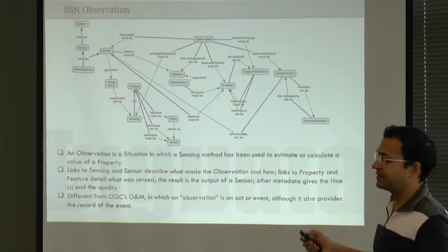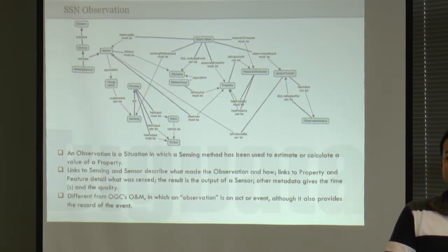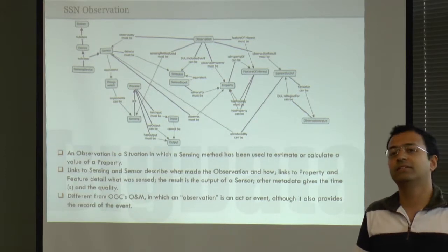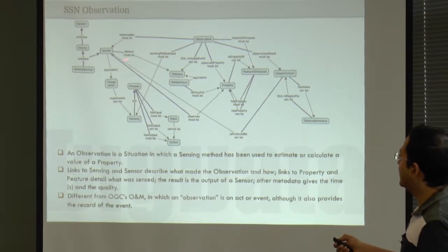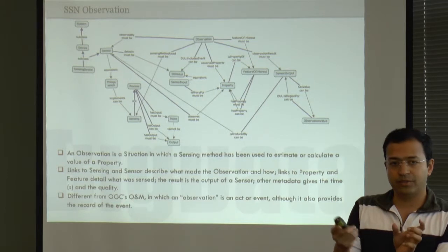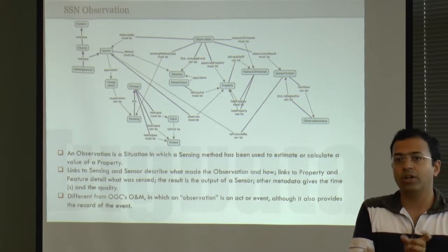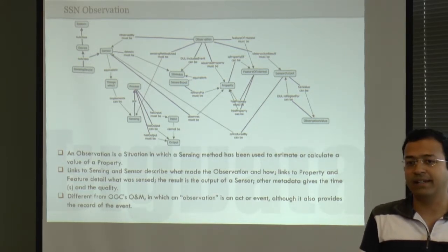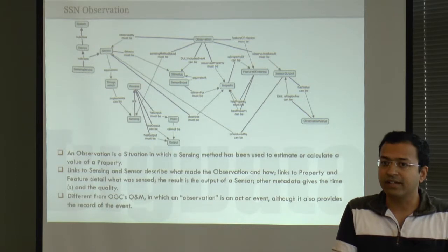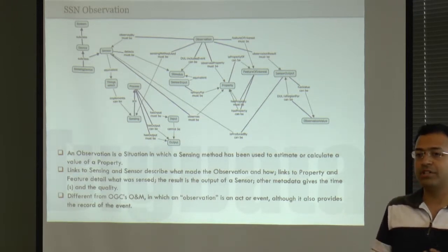SSN observation is a way of associating meaning to the data being generated by the sensor. You could associate something like a timestamp — a metadata associated with the number being generated. SSN observation-related concepts let you describe different observations generated: timestamp, the type of observation — it can be a floating point number or an integer. For example, counting people is an integer; measuring heart rate is mostly an integer; measuring temperature may require floating point numbers.